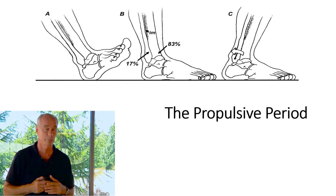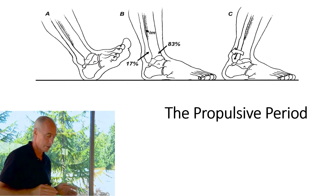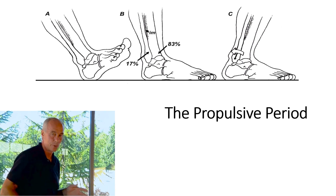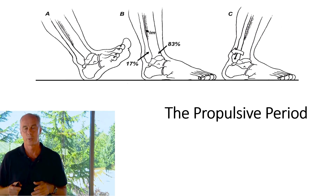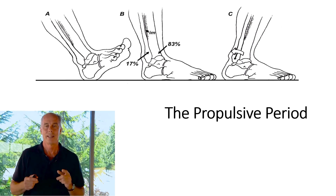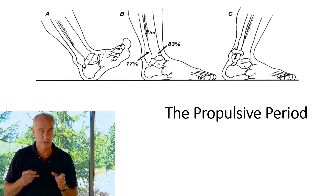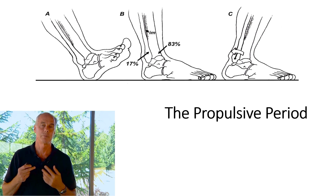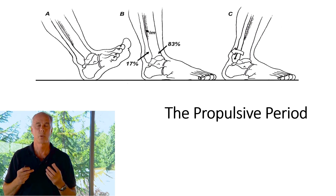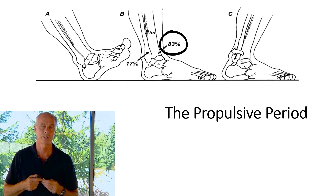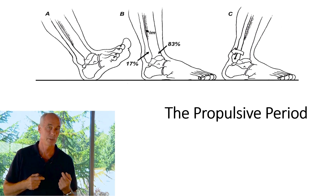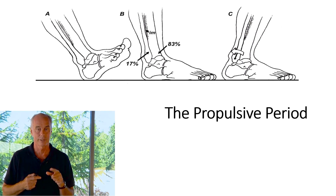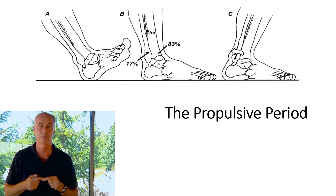As we go into the propulsive period — going one joint at a time with that leg behind you — the tibia supports 83% of the weight of the lower extremity and the fibula only 17%. Most of that 17% is transmitted through the interosseous membrane.